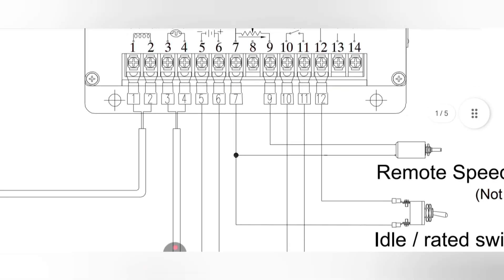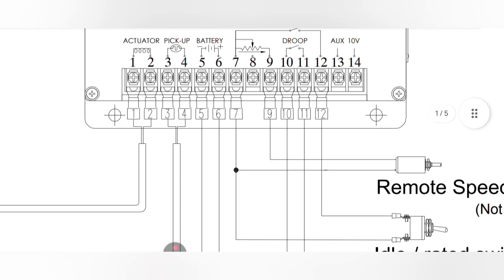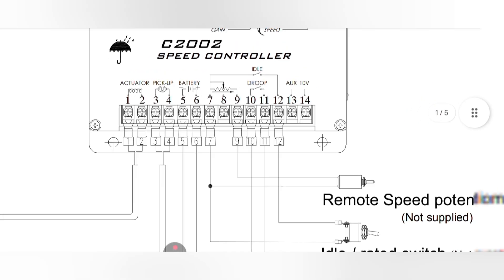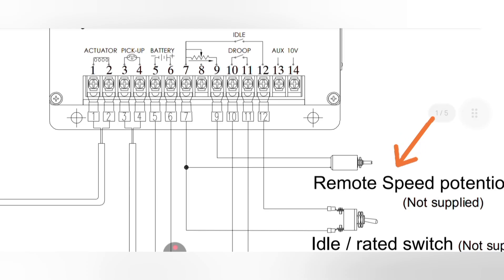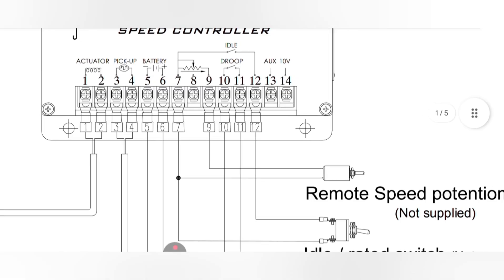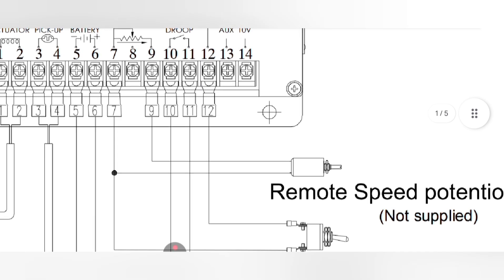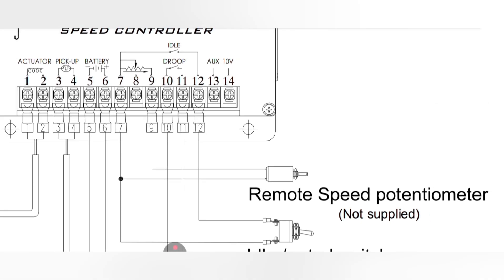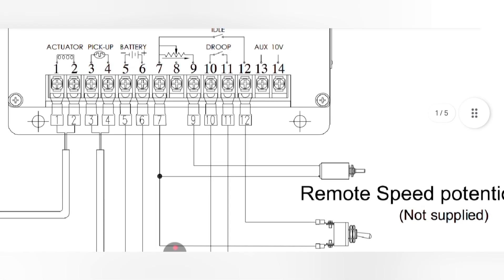Pin number seven and pin number nine are for the remote speed control potentiometer. We can remotely control and adjust the generator speed through this potentiometer from a long distance — for example, 20 or 30 meters away from the generator. By rotating the potentiometer clockwise or counterclockwise we can increase or decrease the engine speed remotely.